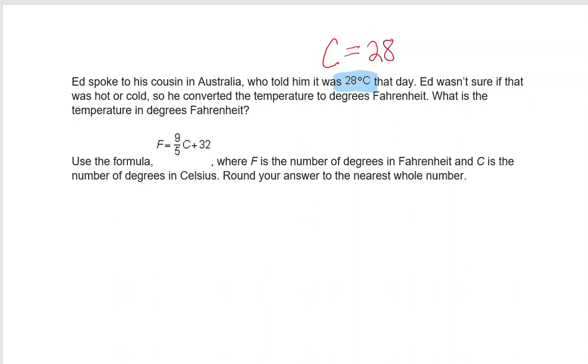Ed wasn't sure if that was hot or cold, so he converted the temperature to degrees Fahrenheit. What is the temperature in degrees Fahrenheit? So F represents, and they tell us that here, F is the number of degrees in Fahrenheit. That's what we don't know, and C is the number of degrees in Celsius, and we do know that it's 28 degrees Celsius where his cousin is at.